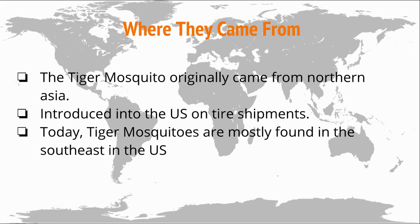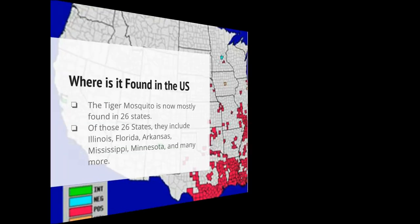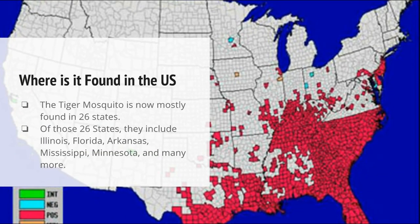Today, Tiger Mosquitoes are mostly found in the southeastern U.S. They are found in 26 states. Of the 26 states, this includes Illinois, Florida, Arkansas, Mississippi, Minnesota, and many more. The background behind you shows all of the states that consist of Tiger Mosquitoes.